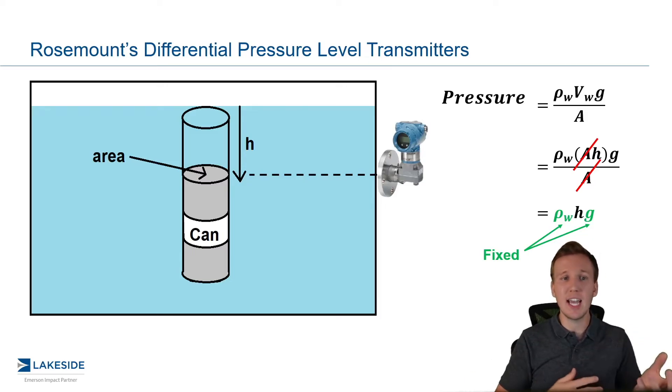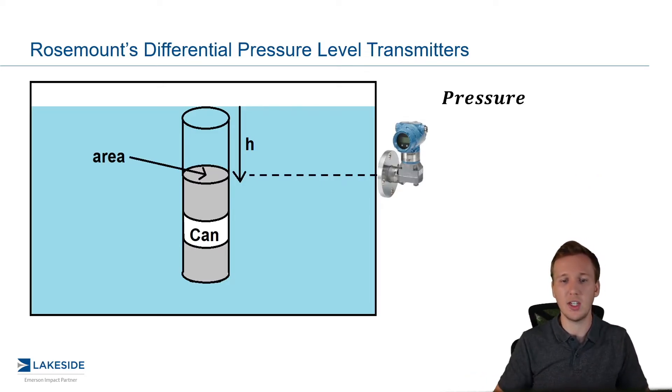But the reality is density does change over time with pressures and temperature changes. And as we talked about in the limitations video, this is one of the big limitations or drawbacks of a DP level transmitter is we have to assume this is constant. But nevertheless, let's assume that is a good assumption and let's continue on with our equation here.